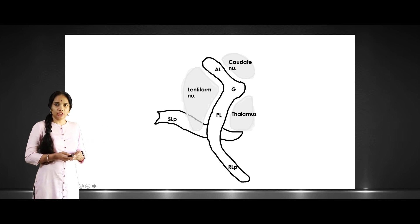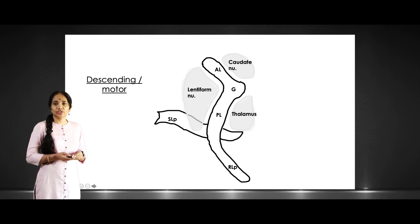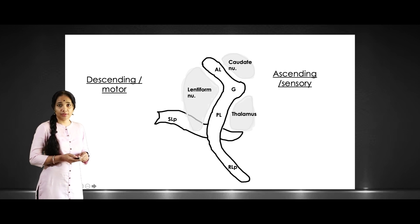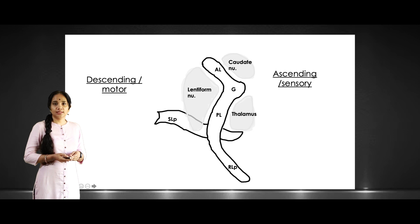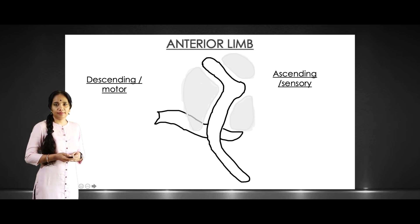Now we'll have to learn the fibers through each part — this is very relevant exam-wise. Fibers can be classified as descending fibers and ascending or sensory fibers, because they pass upwards and downwards. Regarding the anterior limb, let us see the fibers.